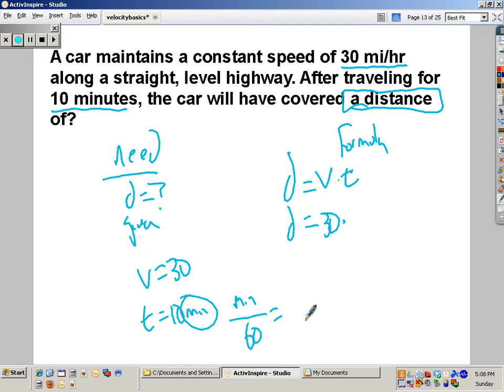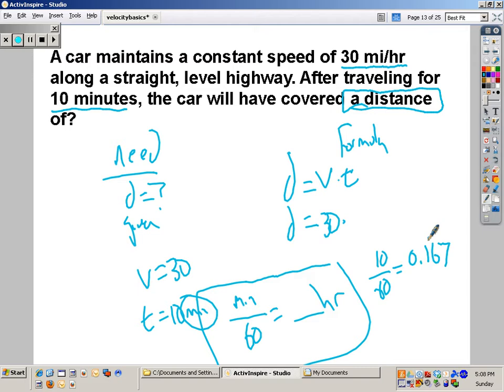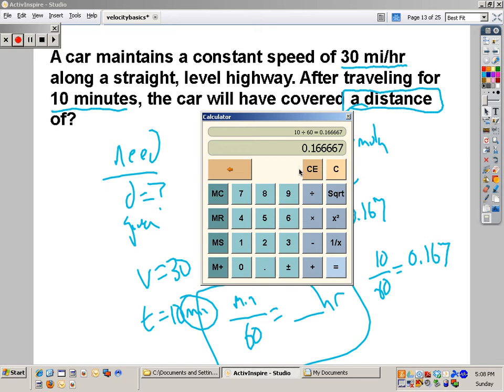So, 10 divided by 60 equals 0.16. Let me check. 0.167. So, now 30 times 0.167 equals, get our calculator up here. 10 divided by 60, now times 30, 5 what?